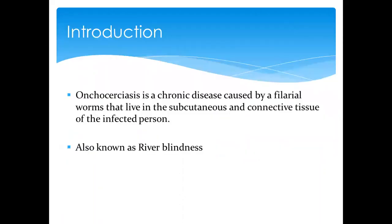Onchocerciasis is basically a chronic filarial disease. We say chronic because it takes time before the effects of the filarial worms are actually seen. As opposed to the others, the filarial worms for onchocerciasis have a high affinity for the subcutaneous and connective tissues. This is important because it differs from elephantiasis, where the filarial worms have an affinity for the lymphatic system.